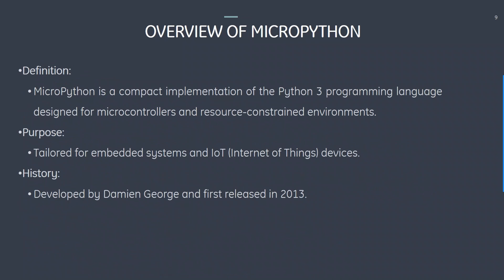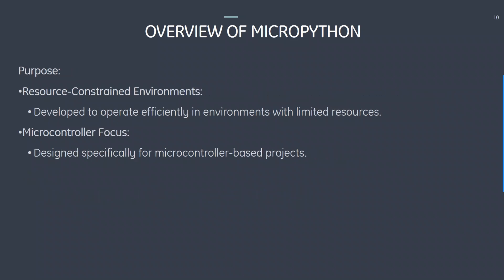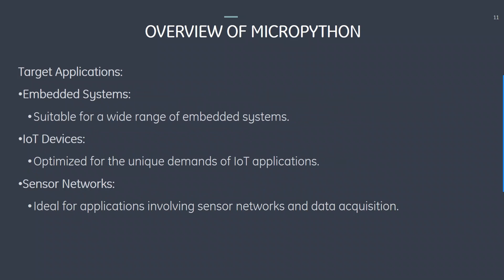Regarding MicroPython, it is a compact implementation of the Python 3 programming language designed for microcontrollers and resource-constrained environments, tailored for embedded systems and IoT (Internet of Things) devices. It was developed by Damien George and first released in 2013. Its purpose includes operating efficiently in resource-constrained environments with microcontroller focus. Targeted applications include embedded systems, IoT devices optimized for unique IoT demands, and sensor networks ideal for data acquisition.